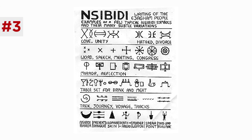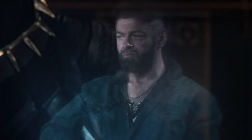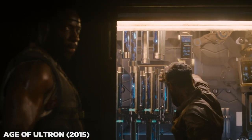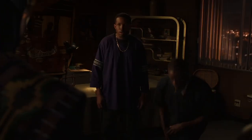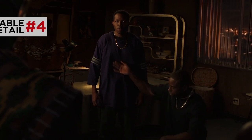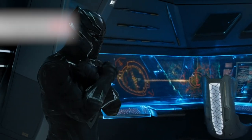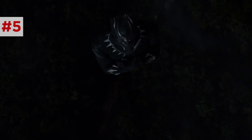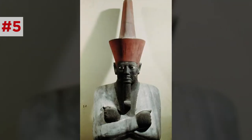T'Chaka explains Ulysses Klaue's stolen vibranium in Age of Ultron was actually made possible by N'Jobu, with information leaked to him by Zuri — Forest Whitaker's younger self, played by Denzel Whitaker. He convincingly poses as non-Wakandan, faking ignorance over kneeling. Zuri and N'Jobu wear purple and black here, their home colors. In the present day, as T'Challa drops from the ship, he folds his arms in the Wakandan salute — derived from Egyptian pharaohs, ancient West African sculptures, and the fact that it translates to 'hug' or 'love' in American sign language.